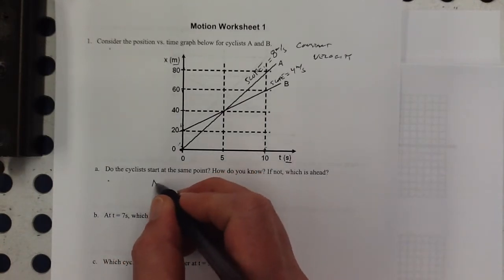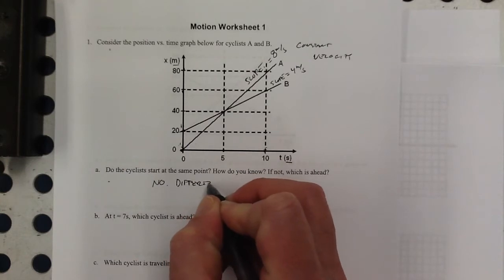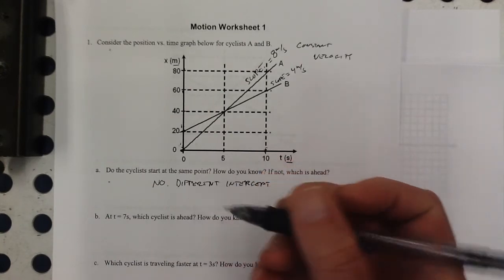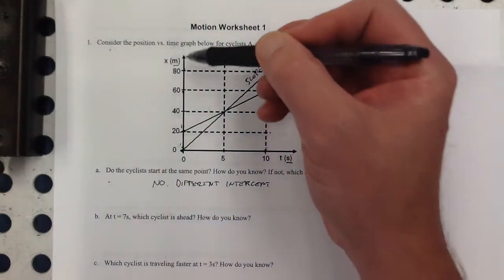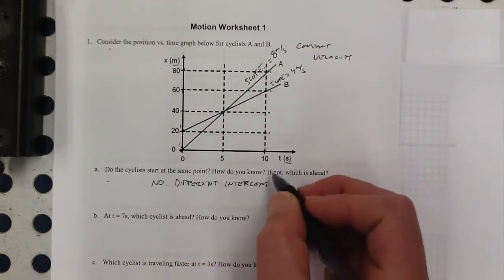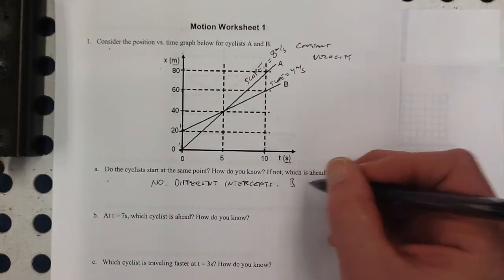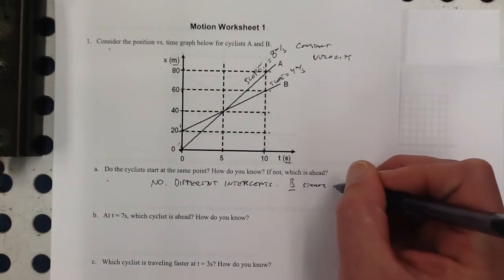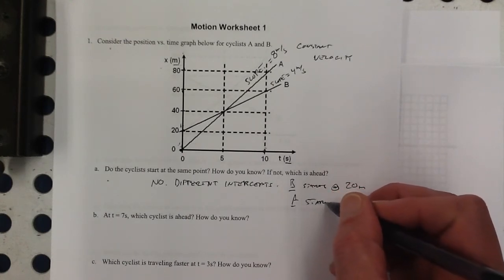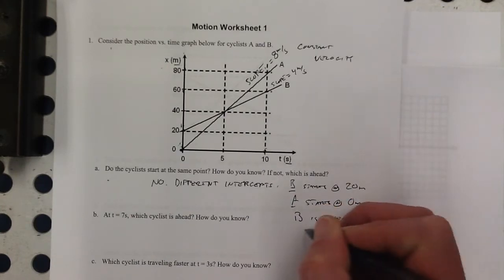Do the cyclists start at the same point? No. How do you know? They have different intercepts. I'm not going to freak out if you say they're different y-intercepts, but this is our position axis. But vertical intercept, I guess you could say, just different intercepts. If not, which is ahead? It looks like cyclist B starts at 20 meters and A starts at 0 meters. So B is ahead.